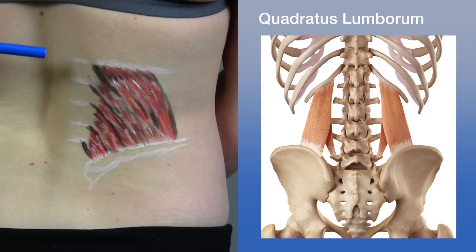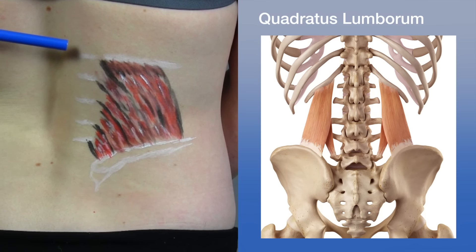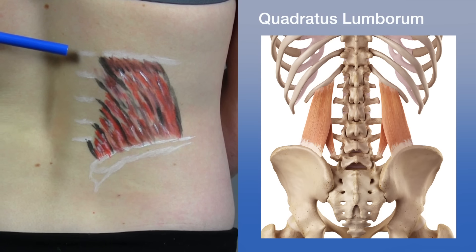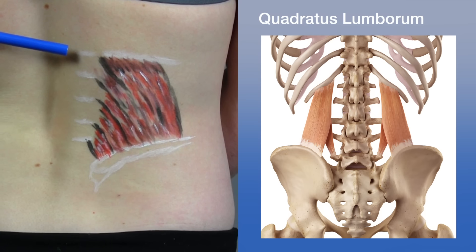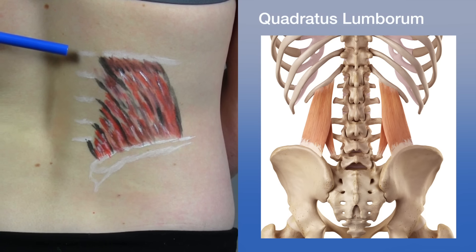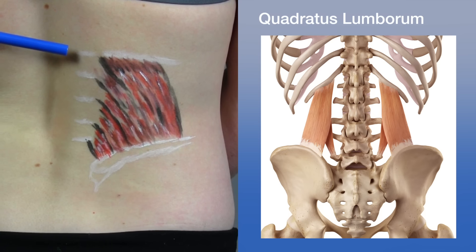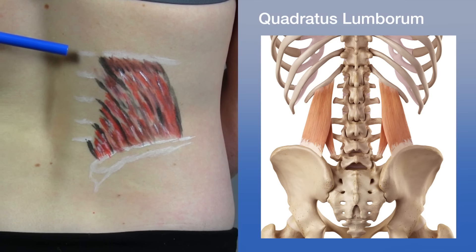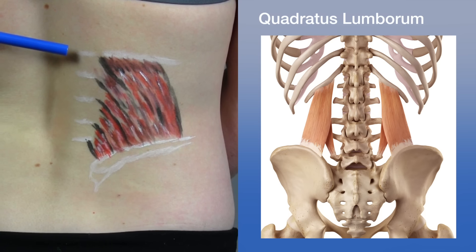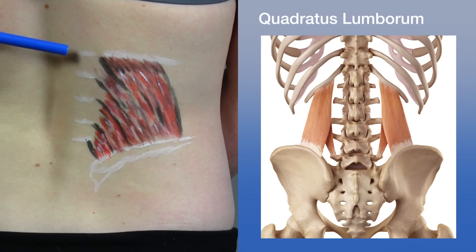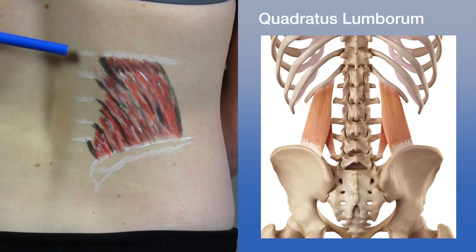The sternocleidomastoid is involved in elevation of the sternum and clavicle and assists in inspiration when the skull is fixed. When the thoracic cage is fixed, unilateral contraction causes ipsilateral bending and contralateral rotation with slight extension. Bilateral contraction results in extension of the head, which accentuates the cervical lordosis.